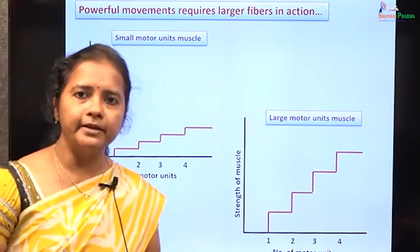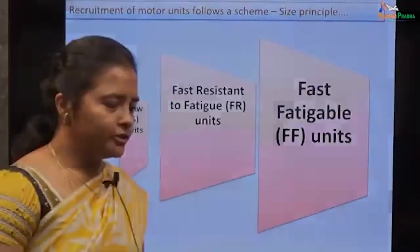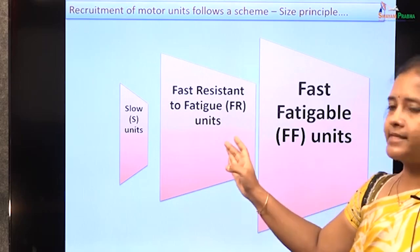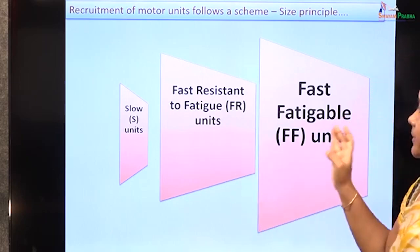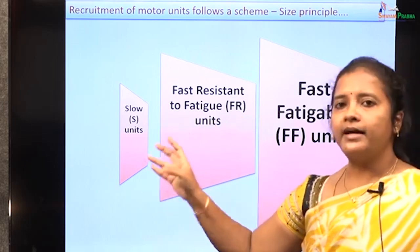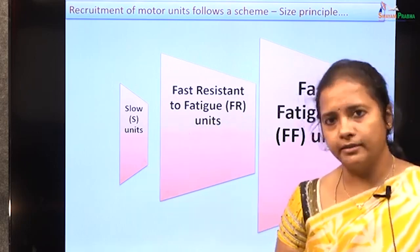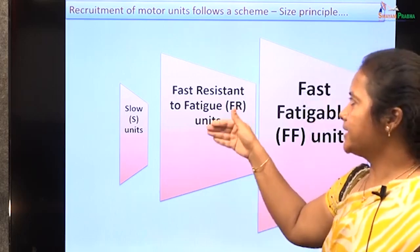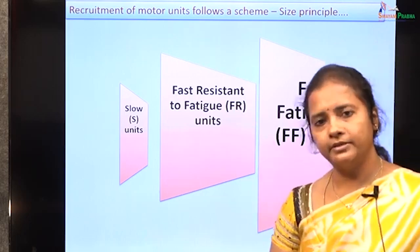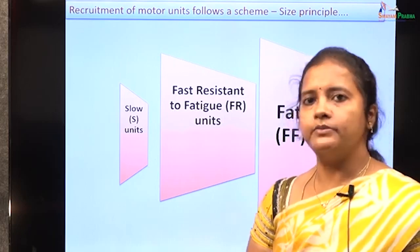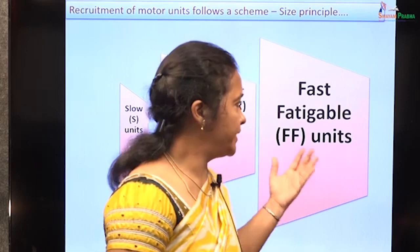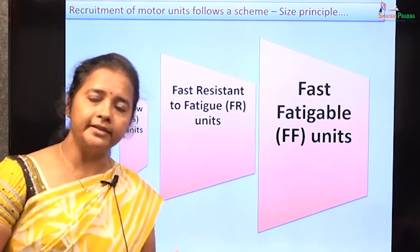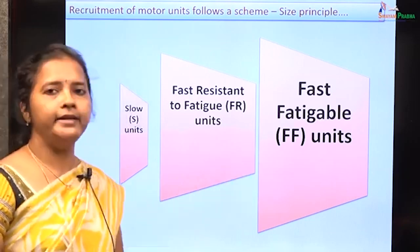This recruitment follows the size principle described by Henneman. Motor units are classified into three types: slow motor units, fast resistant-to-fatigue motor units, and fast fatigable units. Slow units are recruited first for low-intensity actions. As the severity increases, fast resistant-to-fatigue units are recruited. Fast fatigable units are activated during severe muscle actions, after which the muscle goes into fatigue.